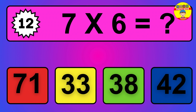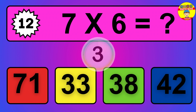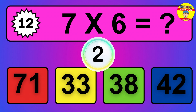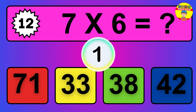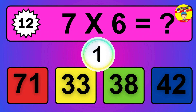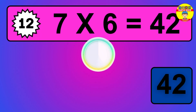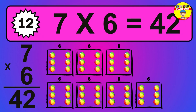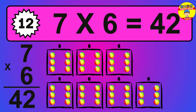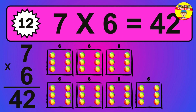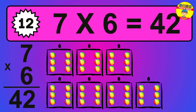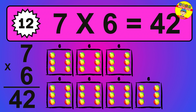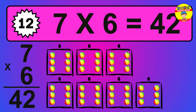Question 12. 7 times 6 equals what? So the answer is 7 times 6 is 42. To calculate, we have 7 groups with 6 balls each one. So how many balls do we have? 42 balls.